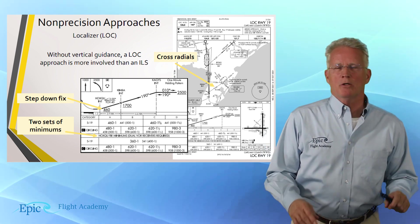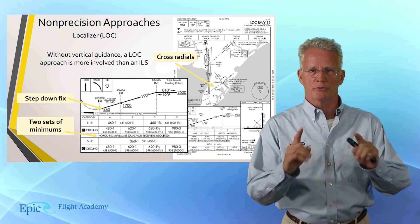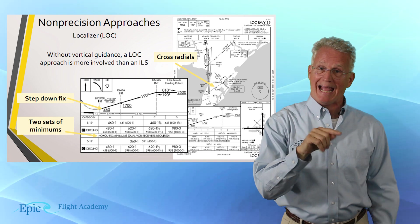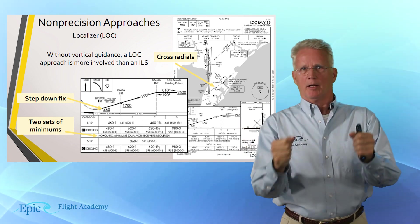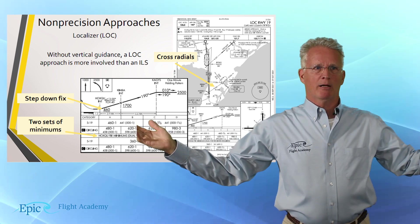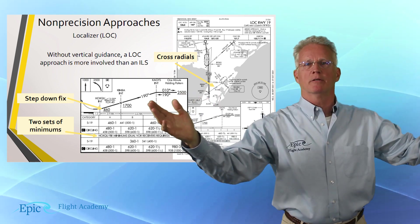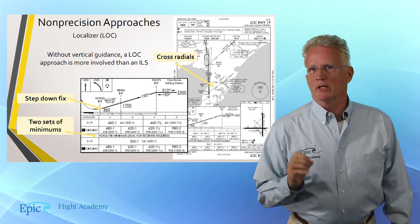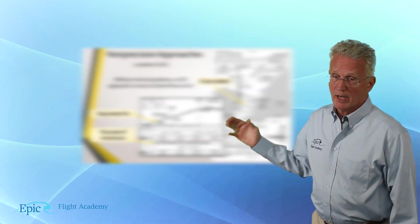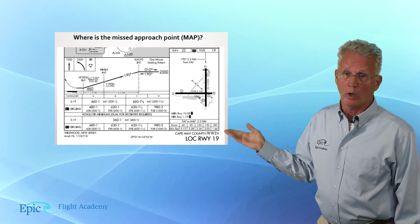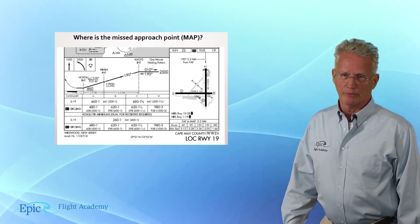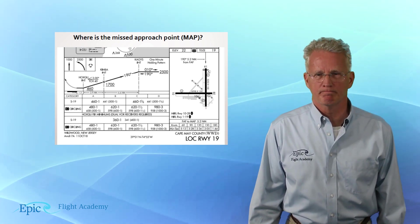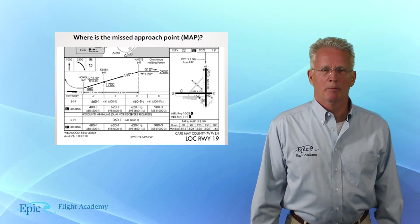One of the key questions with non-precision approaches is: when I get down to my minimum descent altitude — remembering I have to be at or above my MDA — and I'm flying along looking for the runway, how long do I fly? There are specific missed approach points. For the localizer approach to runway 19, if you look at the profile view and the bird's-eye view of the field, where is that missed approach point?